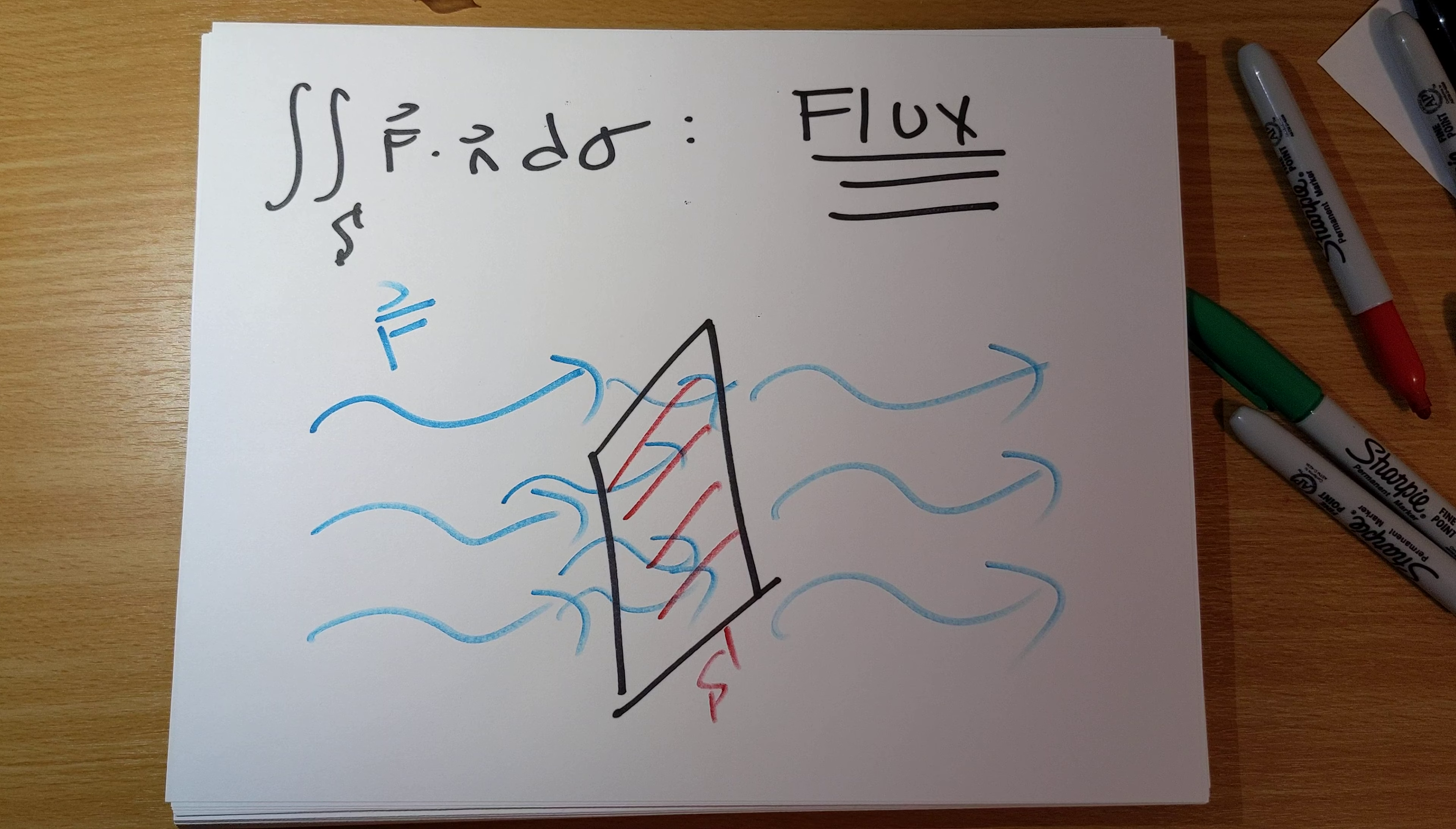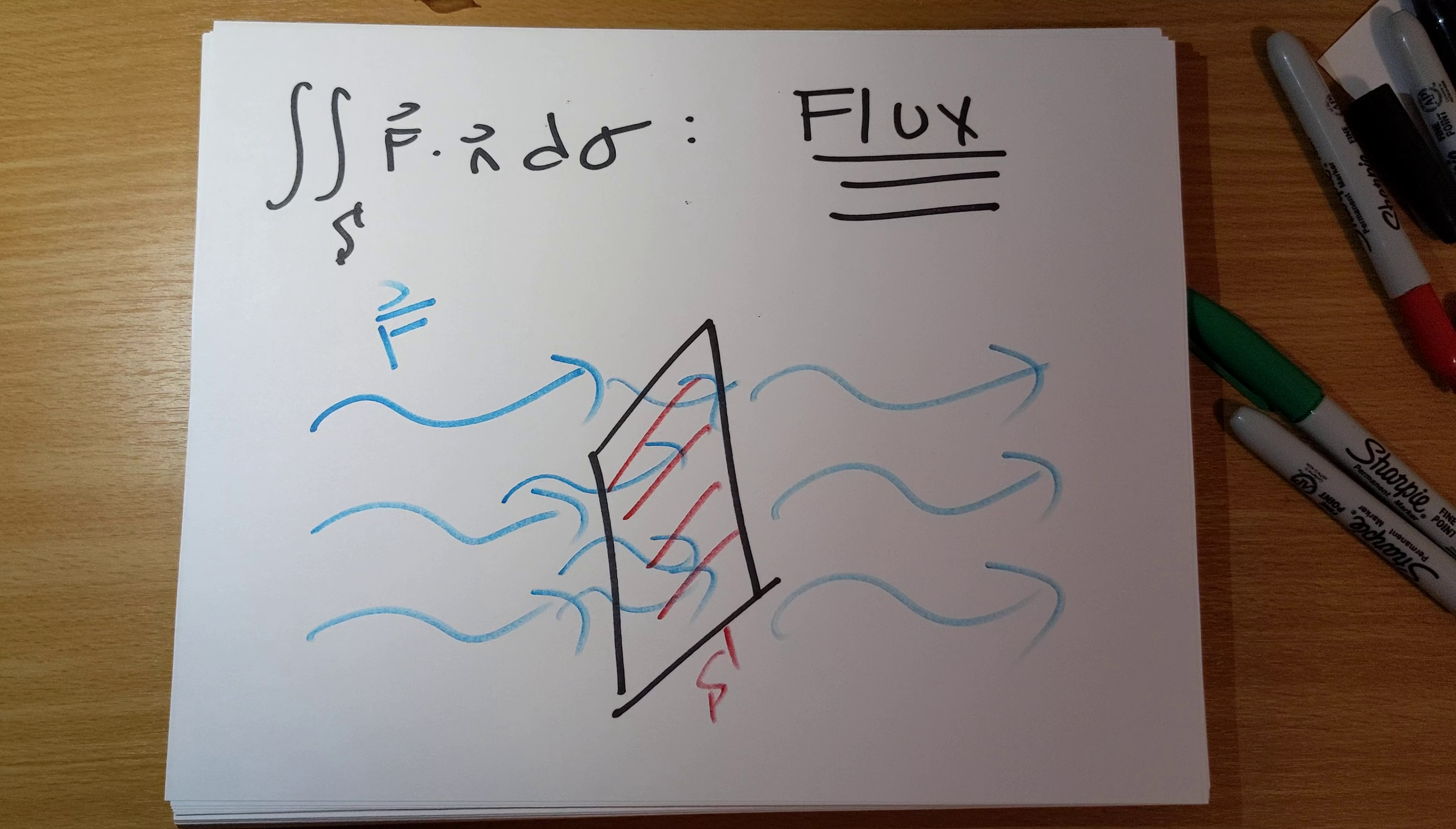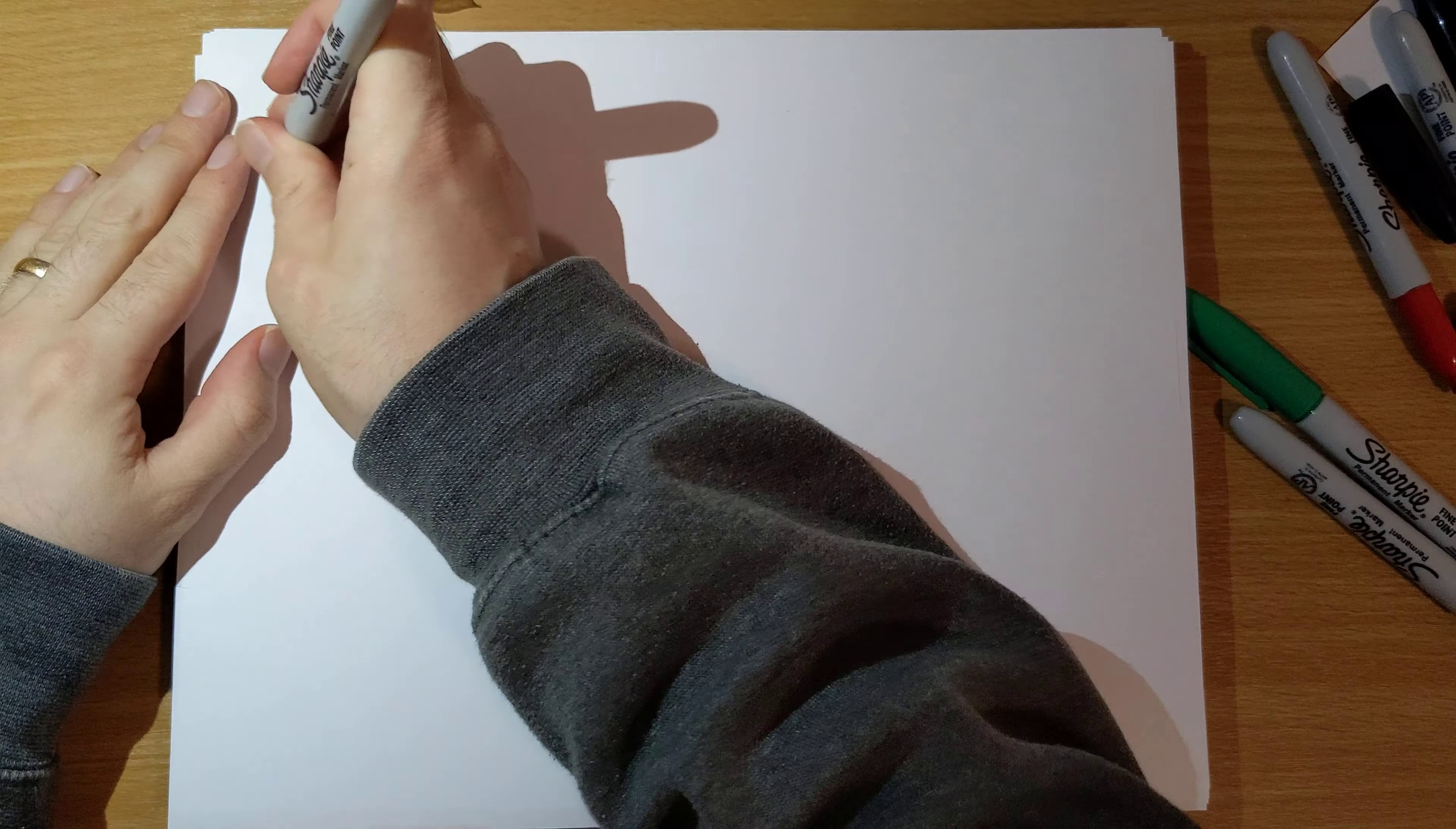I should point out that this F dot N—the more that the vector field is pointing in the direction perpendicular to the surface, the more the flux is going to be.